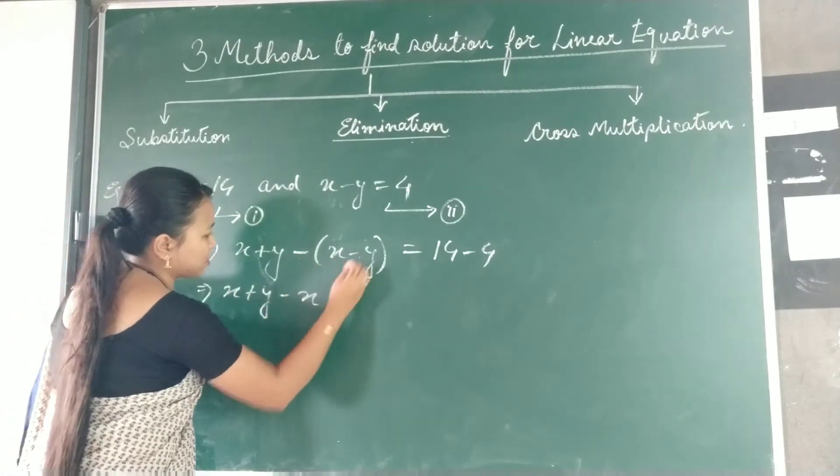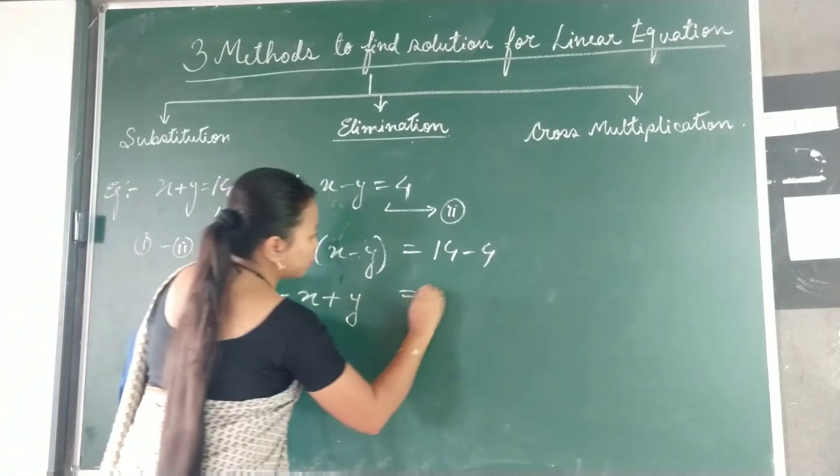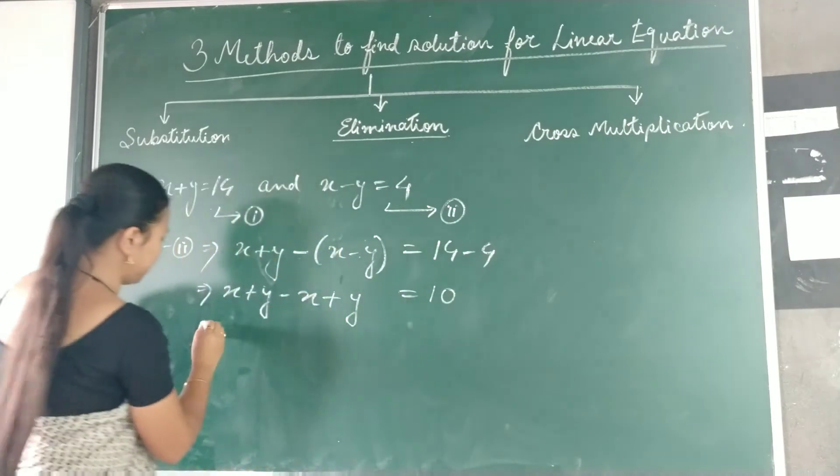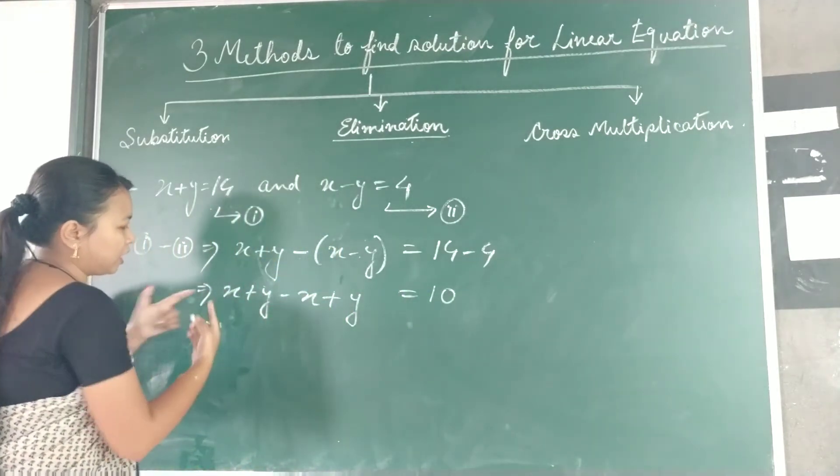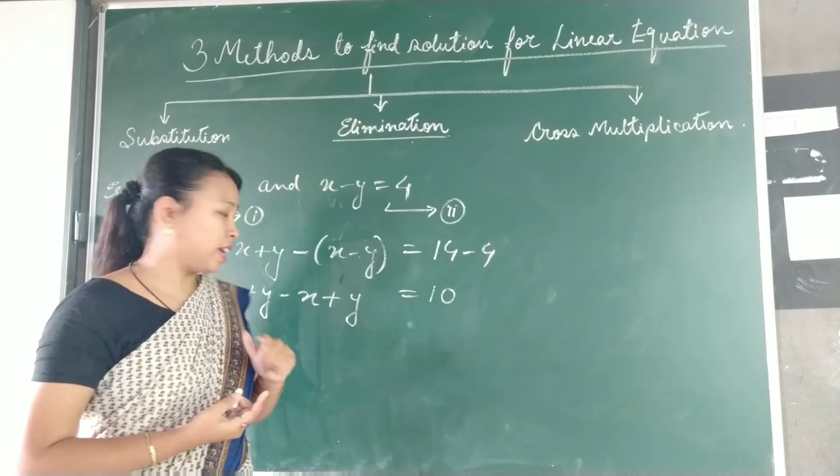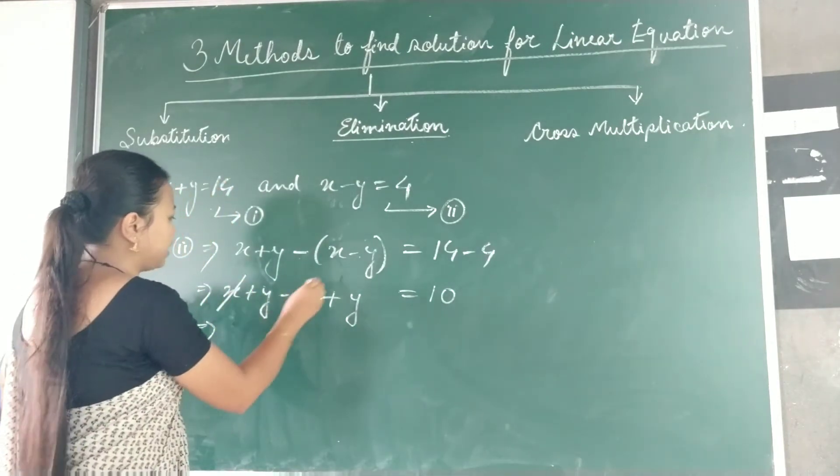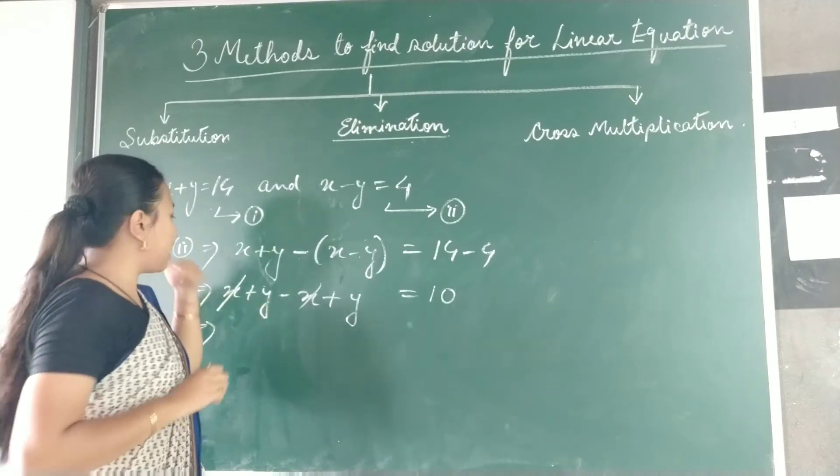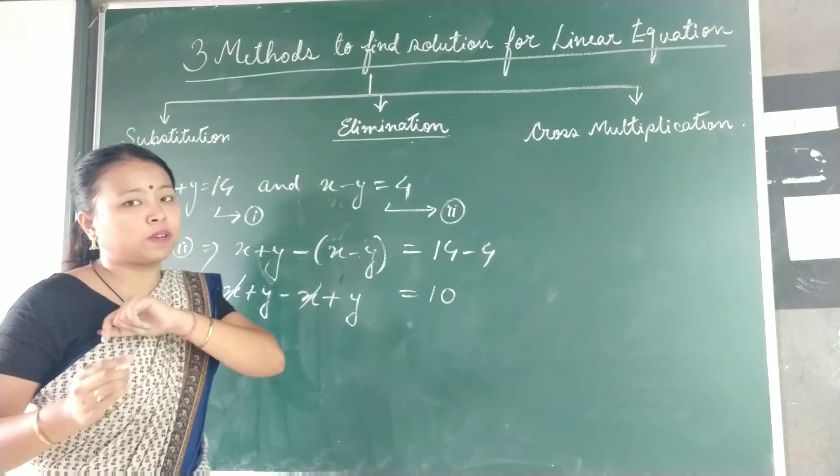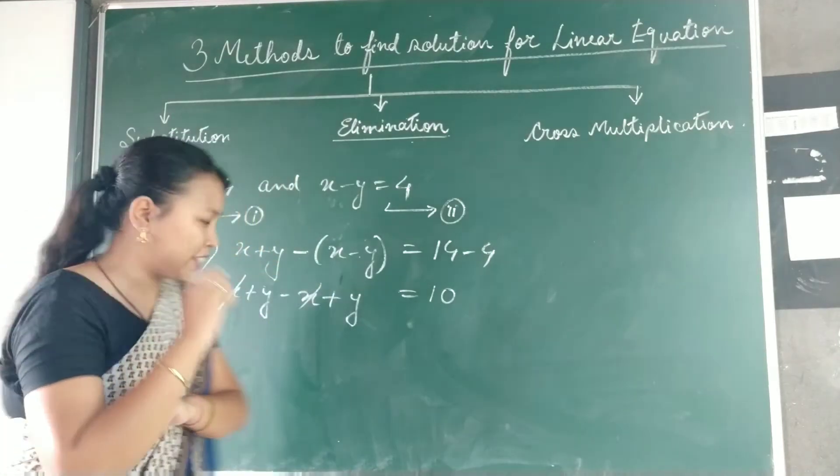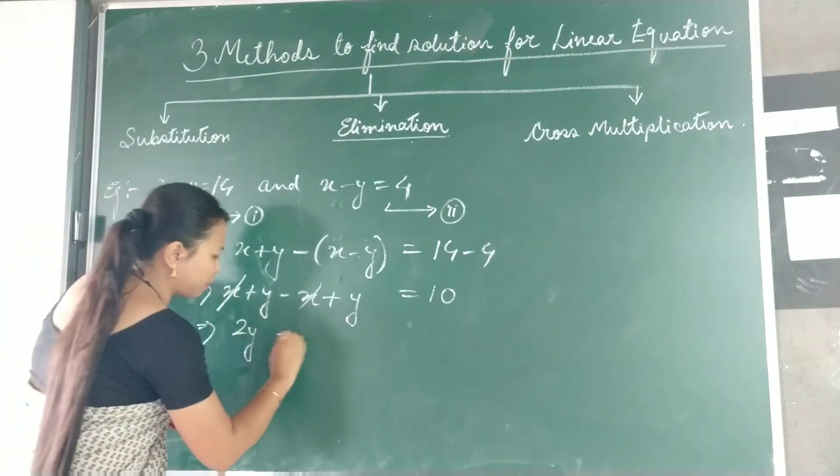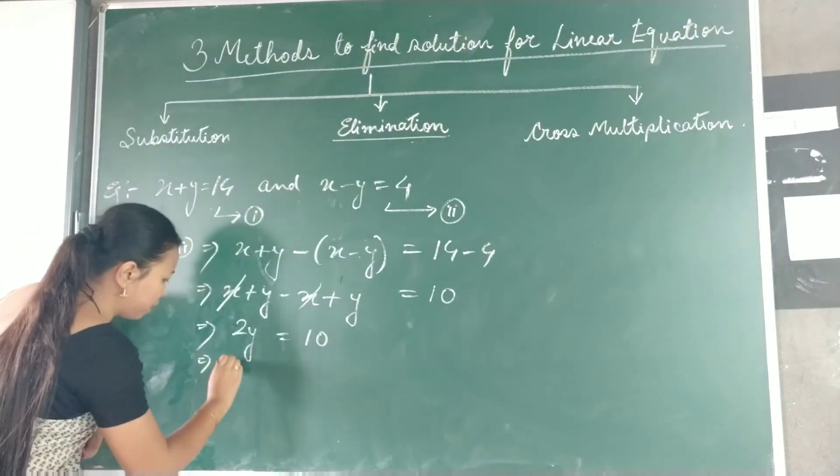Now open up the bracket: x plus y minus x plus y equals 10. My intention was to cancel out x. I can cancel it because plus y and plus y will result in 2y. 2y equals 10.